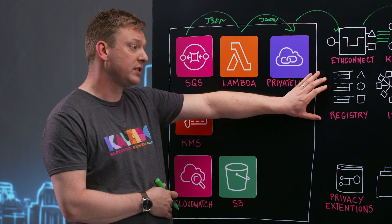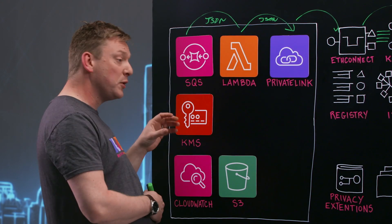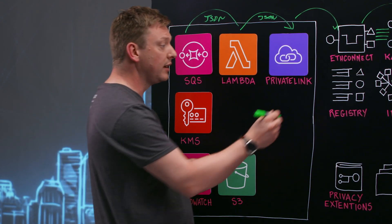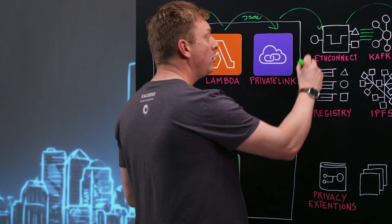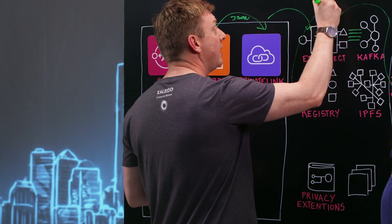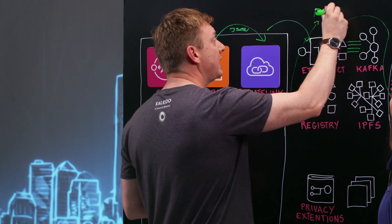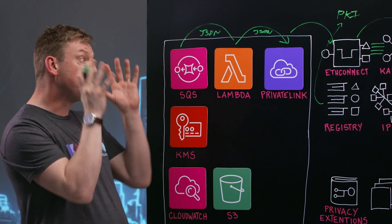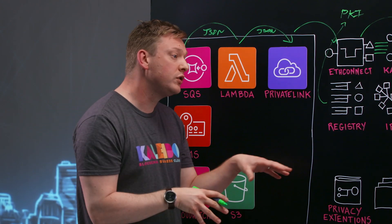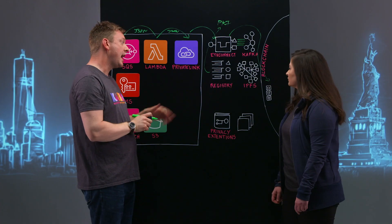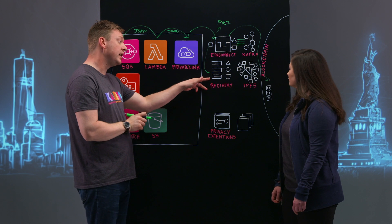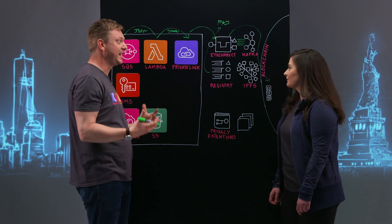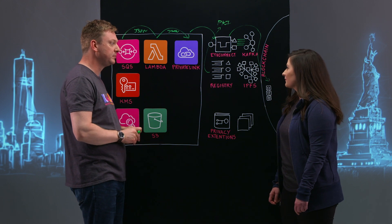This is something that we provide out of the box. The registry is a tying between a real-world identity, and in Kaleido we let you use a PKI identity — that's just a standard thing that everybody uses for a website. We allow you to pin one of those down on-chain in the registry, and that gets tied to a key, because everything in a blockchain is based on a key. That's what identity comes down to.